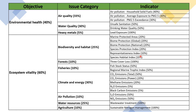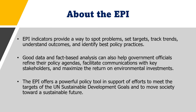In 2012 there were around 22 performance indicators; by 2020 this grew to 32. EPI indicators provide a way to spot problems, set targets, track trends, understand outcomes, and identify best policy practices. Good data and fact-based analysis can also help government officials redefine their policy agendas, facilitate communication with key stakeholders, and maximize the return on environmental investments.